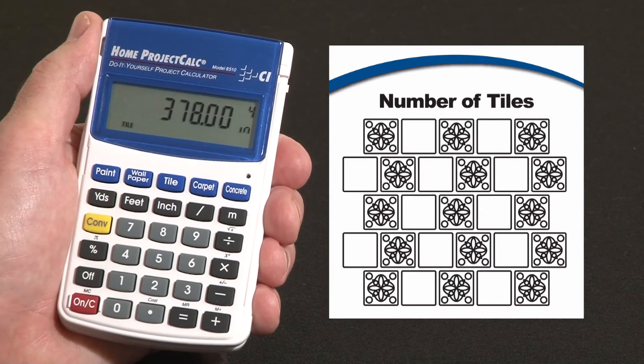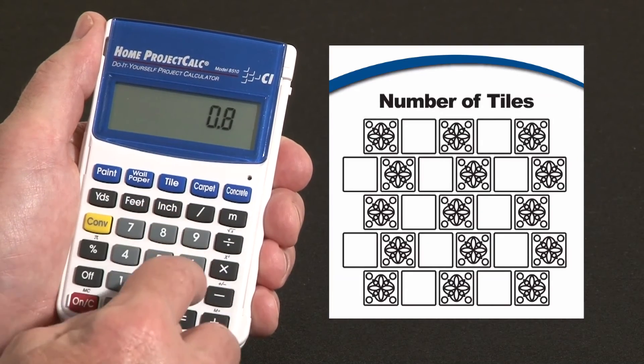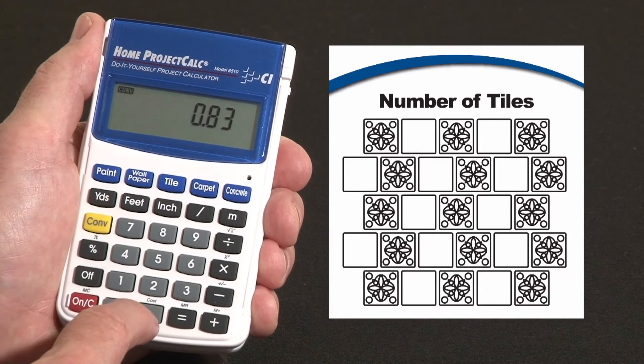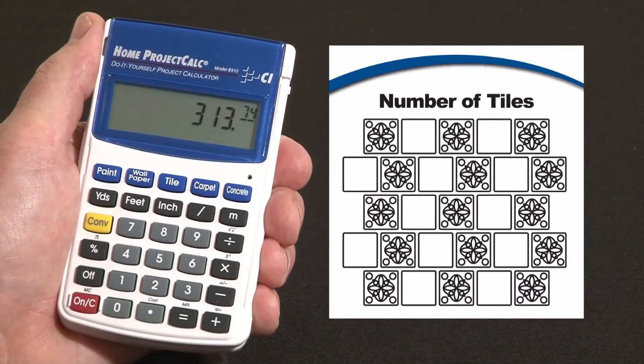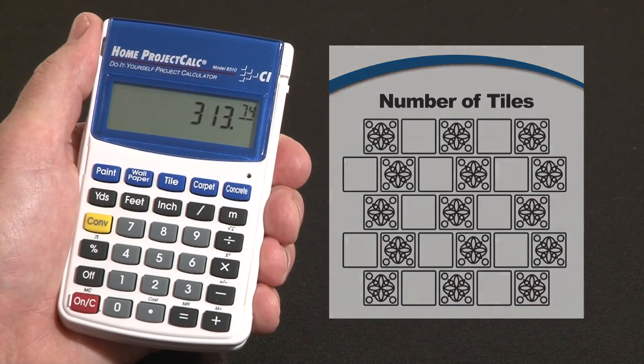And if those things go for 83 cents each, times .83, convert that to cost or over the decimal point here. And we find we need about 313, 314 dollars worth of tile.